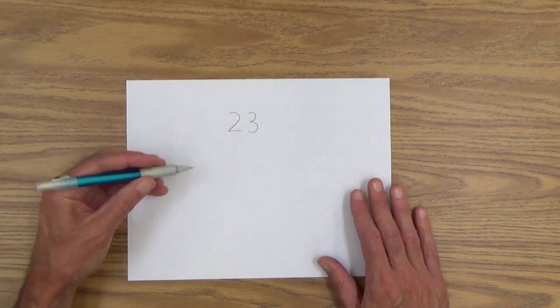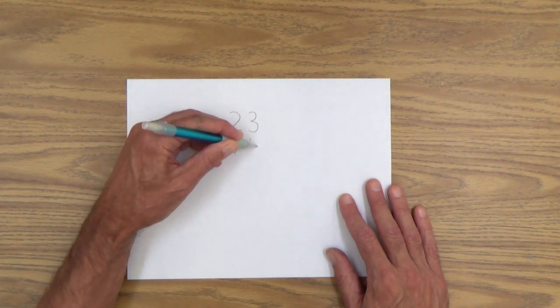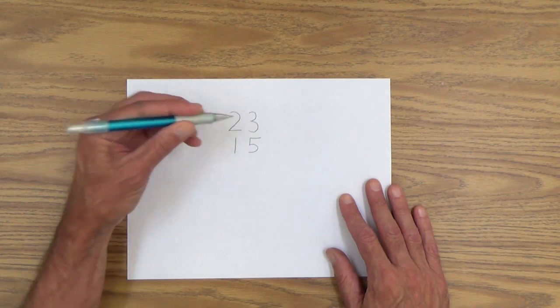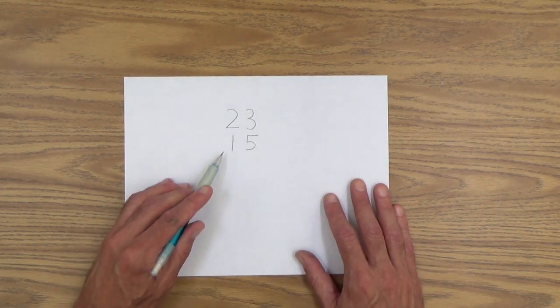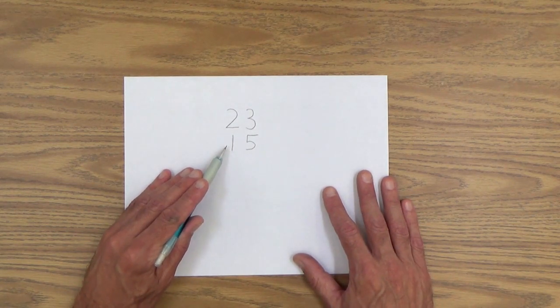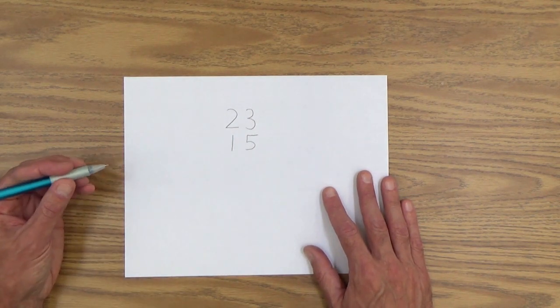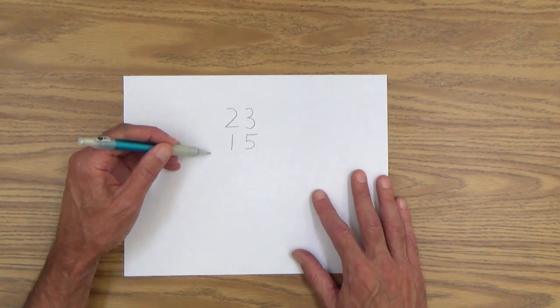And then write this number. And maybe by this time, she will chime in and say, oh, yes, that's 15. That's one 10 or one group of 10 and five ones. And then you can say, all right, so let's add those together. How would you do that?